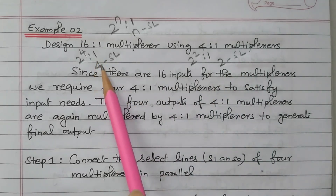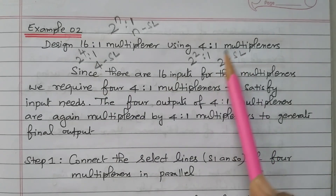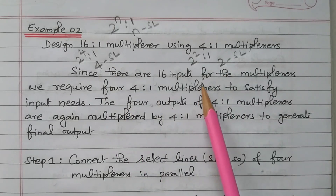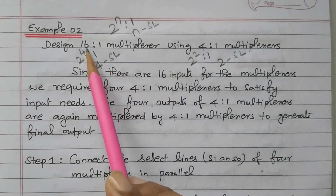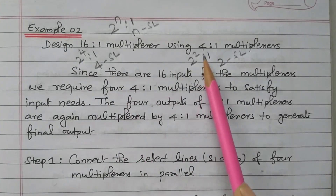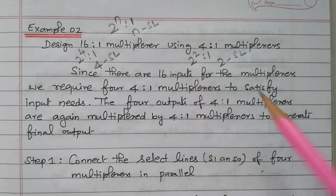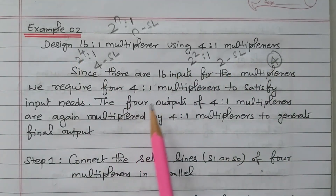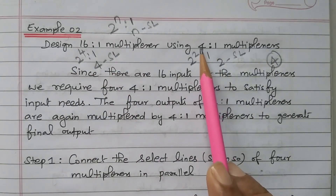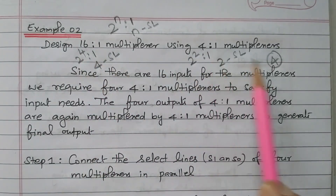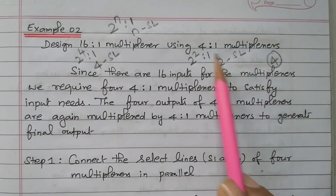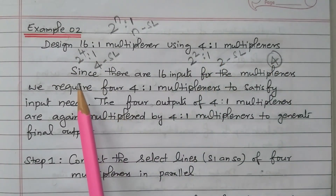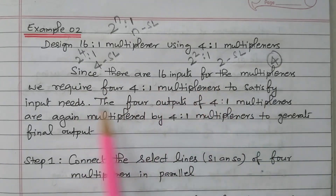We need to connect 16 inputs, but a 4-to-1 multiplexer has only 4 inputs. So in order to connect 16 inputs, we need 4 multiplexers — 4 into 4 gives us 16 inputs. Since there are 16 inputs for the multiplexer, we require 4 four-to-1 multiplexers to satisfy the input needs.